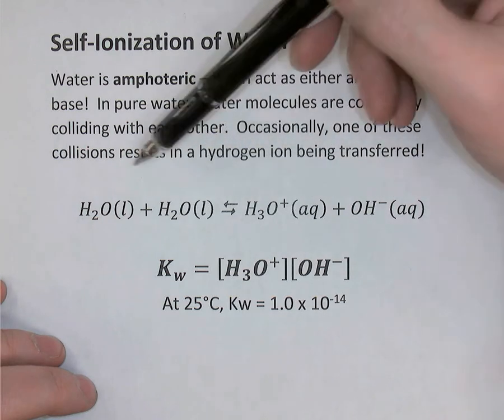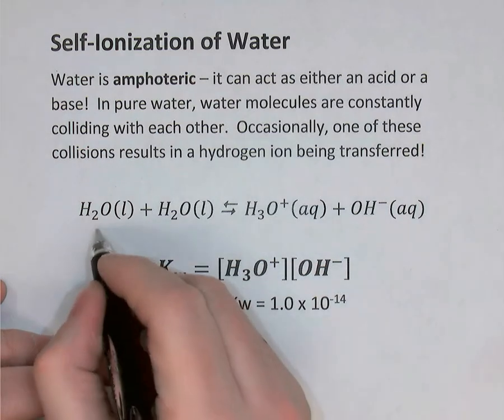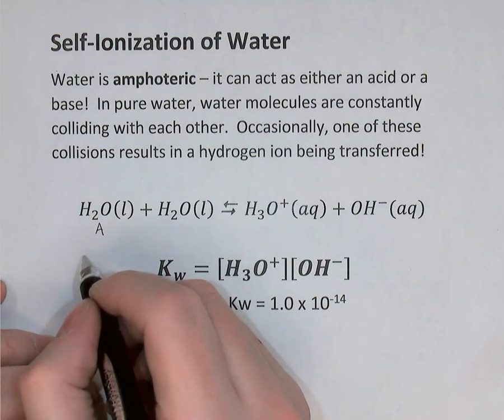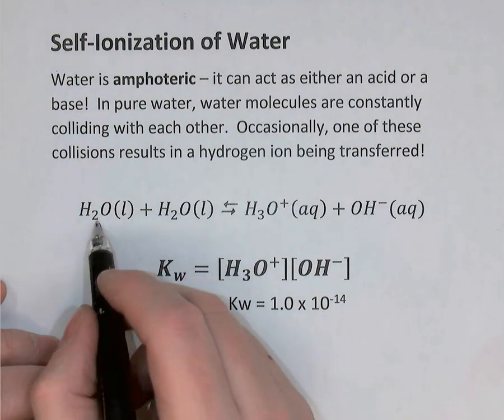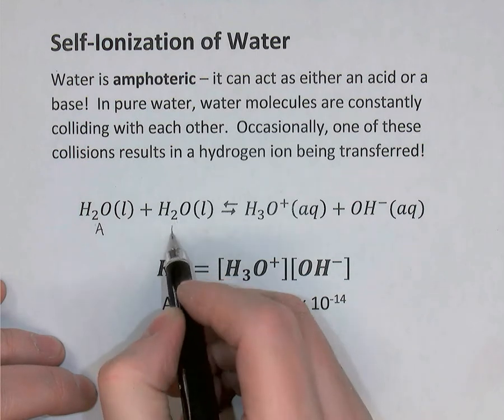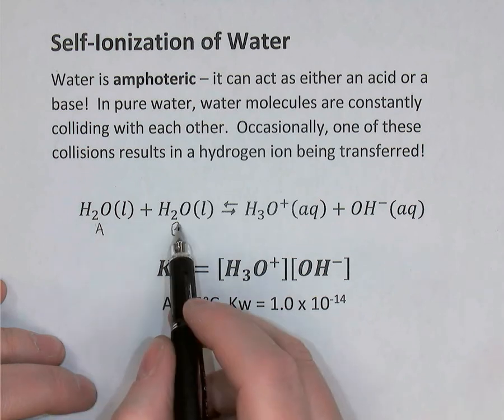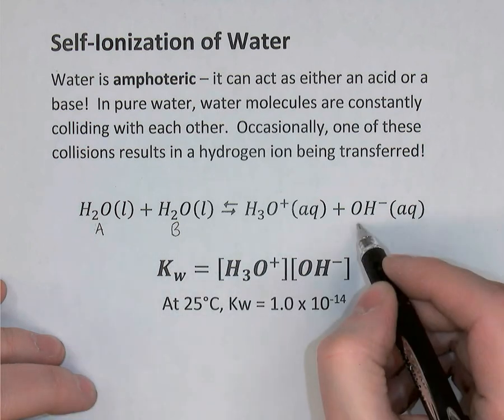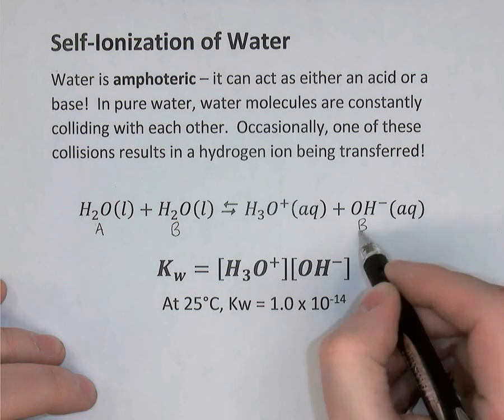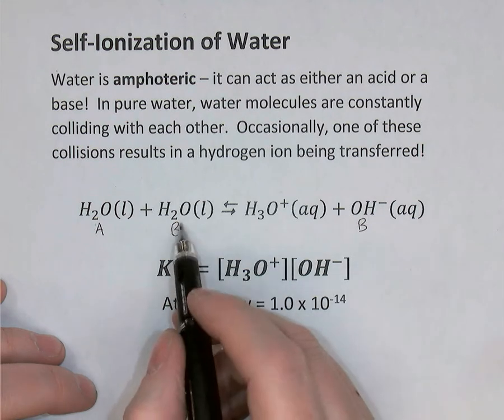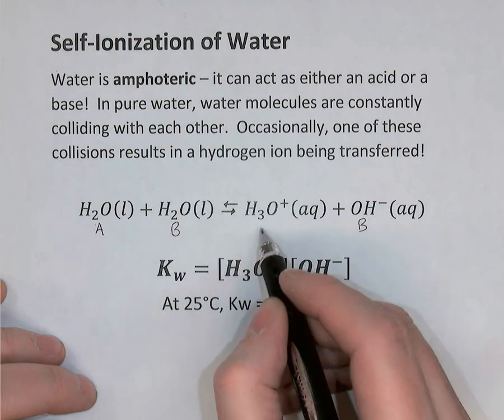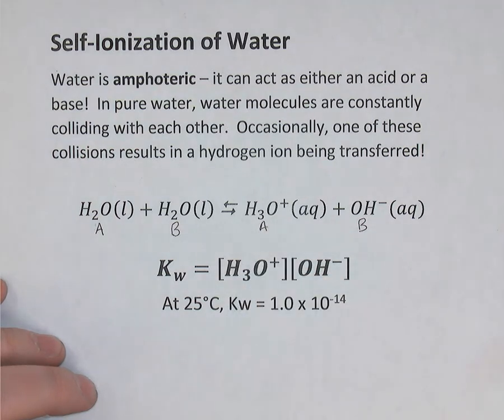So one water molecule is behaving as an acid. When it behaves as an acid, it donates its hydrogen to the other. So the other one becomes a base. And the one that donated hydrogen ends up with hydroxide ion as a conjugate base. The one that accepted the hydrogen ion ends up as a hydronium ion as its conjugate acid.